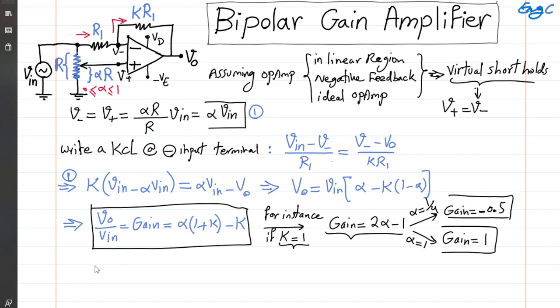As another example, if K equals 100, the gain formula becomes 101*alpha - 100. If we set alpha to 0, we get gain = -100. If we set alpha to 1, we get gain = +1.